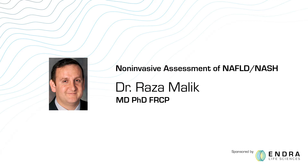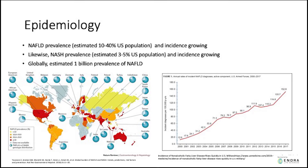I'd like to begin by talking about the epidemiology of non-alcoholic fatty liver disease. As you can see from this initial slide, there is an epidemic in fatty liver as evidenced by non-alcoholic fatty liver disease and NASH, and it's throughout the world. It's not just the developed countries of North America and Western Europe — it also includes Asia and South America. The metabolic syndrome, which results in obesity, results in non-alcoholic fatty liver disease, which is the umbrella term for fat deposition in the liver in the context of obesity and in the absence of alcohol use, and also the more severe form, which is NASH.